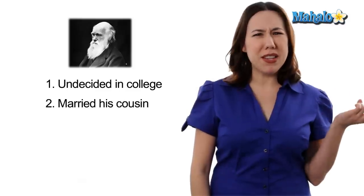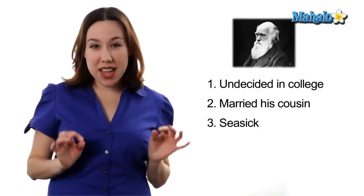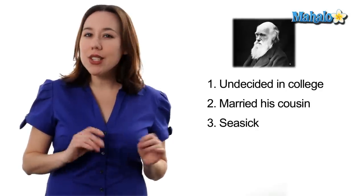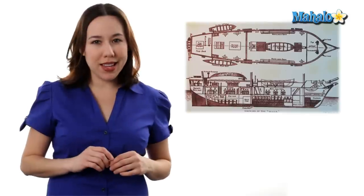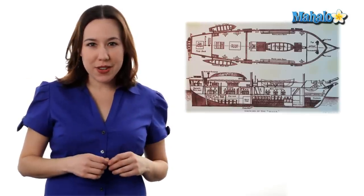Number two, he married his first cousin. Let's jump to number three, he was seasick for almost the entire five years he spent as a naturalist on the HMS Beagle. Now, in case you didn't know, his five years spent on the HMS Beagle was where he was able to deduce and create his evolutionary theory.